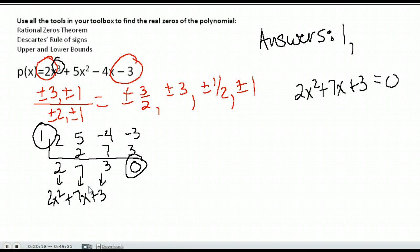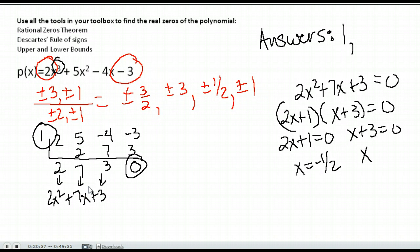So if it doesn't factor or if you're not comfortable factoring this type, you can always use the quadratic formula. This does factor, however, it factors as 2x plus 1 times x plus 3. I would set each of those equal to 0 and solve them to find my last two zeros. And I get x is negative 1 half and x is negative 3.